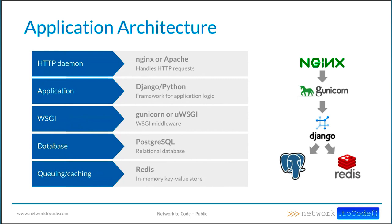Basically, the WSGI processes run under Gunicorn, which sits behind Nginx or Apache. You can see the example stack to the side here. You can use Nginx or Apache, you can use Gunicorn or uWSGI — the different components are up to you. This is just probably our most common stack. Behind the application on the database layer, we have PostgreSQL for relational database, and we use Redis — which is an in-memory key-value store — for task queuing and data caching.